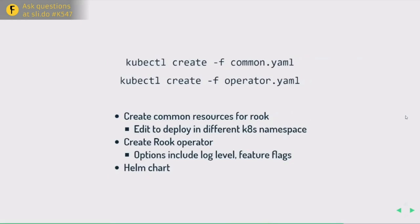The common.yaml just creates the basic resources used by Rook. The only reason to edit it is if you want to deploy Rook in a different namespace — by default it deploys into a namespace called rook-ceph, which you might rename if you had multiple Rook instances in the same Kubernetes cluster.